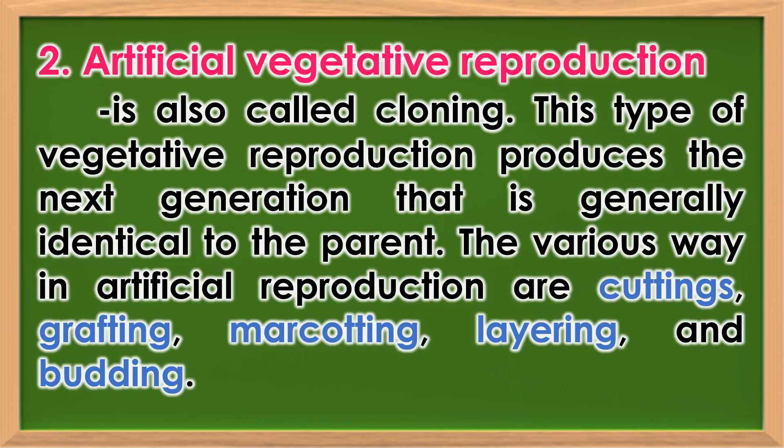Artificial vegetative reproduction, also called cloning, is the second type. This type of vegetative reproduction produces the next generation that is generally identical to the parent. The various ways of artificial reproduction are cuttings, grafting, marcotting, layering, and budding.